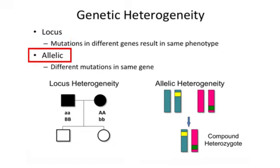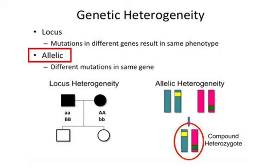In contrast, allelic heterogeneity means that different types of mutations — depicted as squares within the gene rectangle — can cause disease. One parent may be a carrier for the yellow mutation, the other for the green mutation. The child is heterozygous for both; we call this compound heterozygosity. This is not identical by descent as in consanguinity, but if both mutations have a severe effect on the function of the gene, the child would be considered homozygous for some mutation and would be expected to show the phenotype.